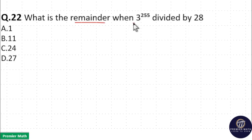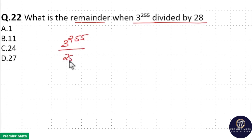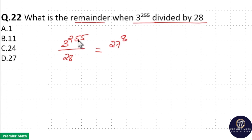What is the remainder when 3 raised to 255 is divided by 28? Here, 3 raised to 3 is equal to 27. So 3 raised to 255 can be rewritten as 27 raised to 85, since 3 times 85 equals 255.